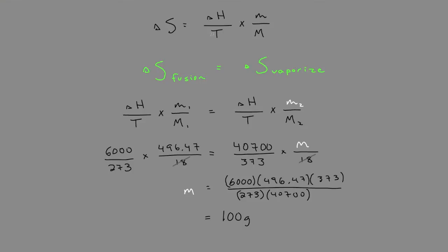So just as a takeaway, one thing to remember is for phase change calculations of entropy, make sure you just use the temperature that that phase change occurs at. So that's the melting point or the boiling point.